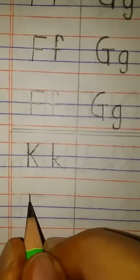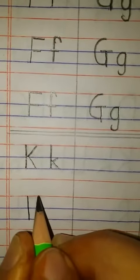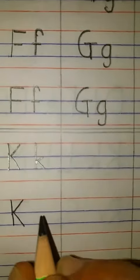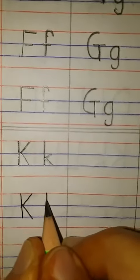So let's see it once again. For capital K, draw a standing line. Then draw two slanting lines. This is capital K. For small k, draw a standing line.